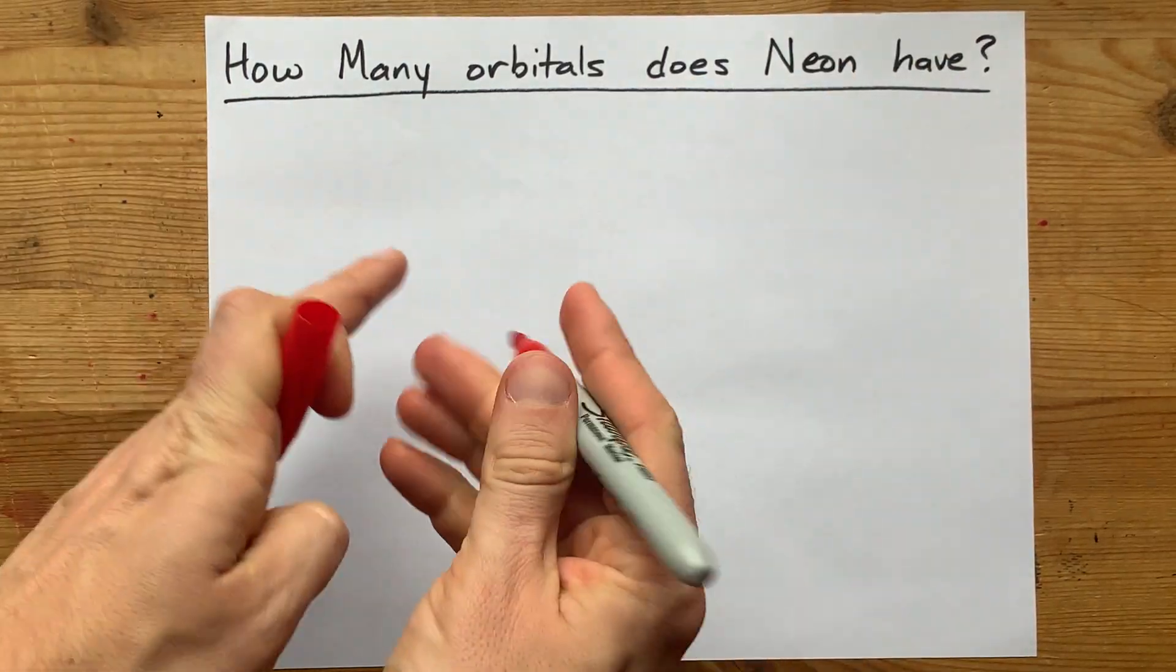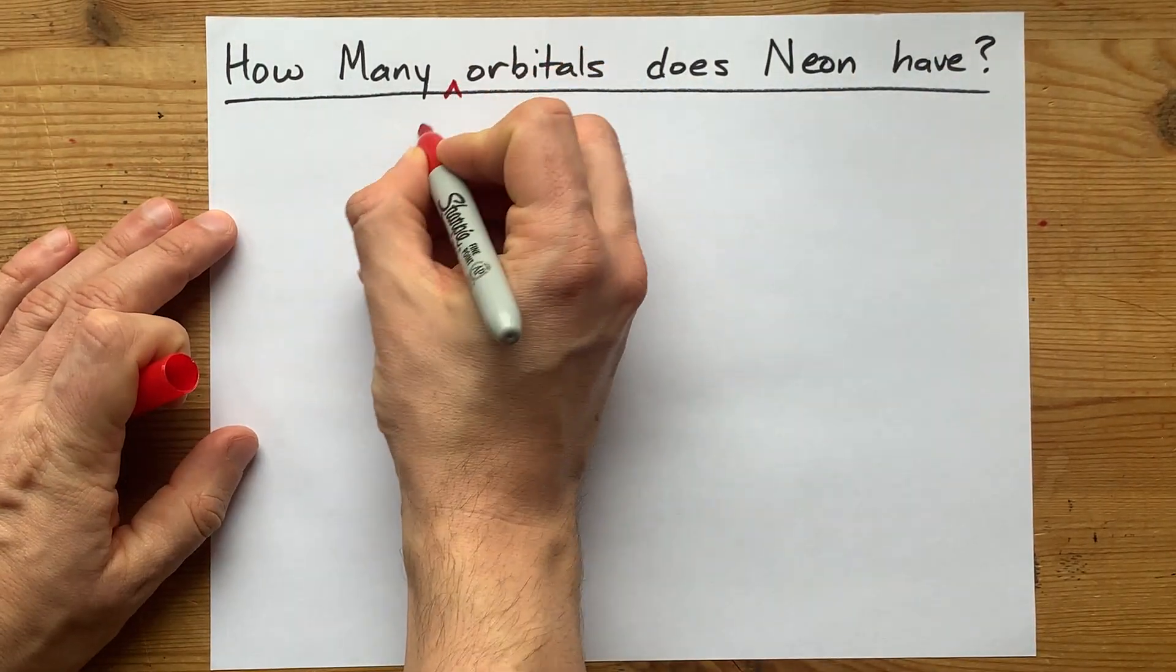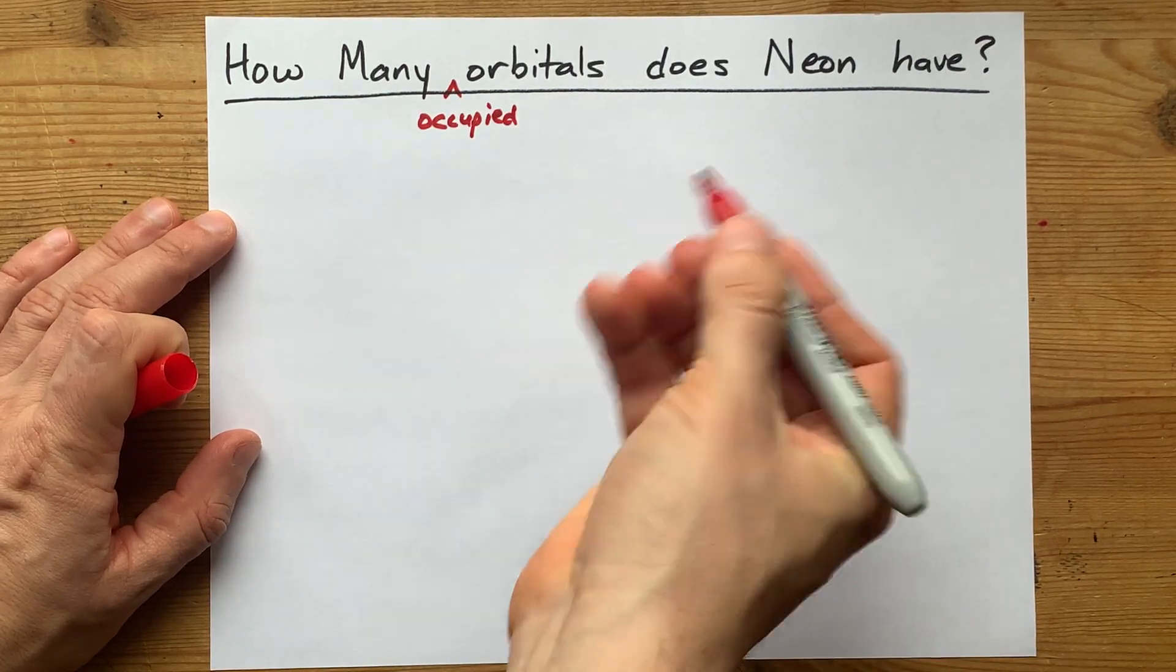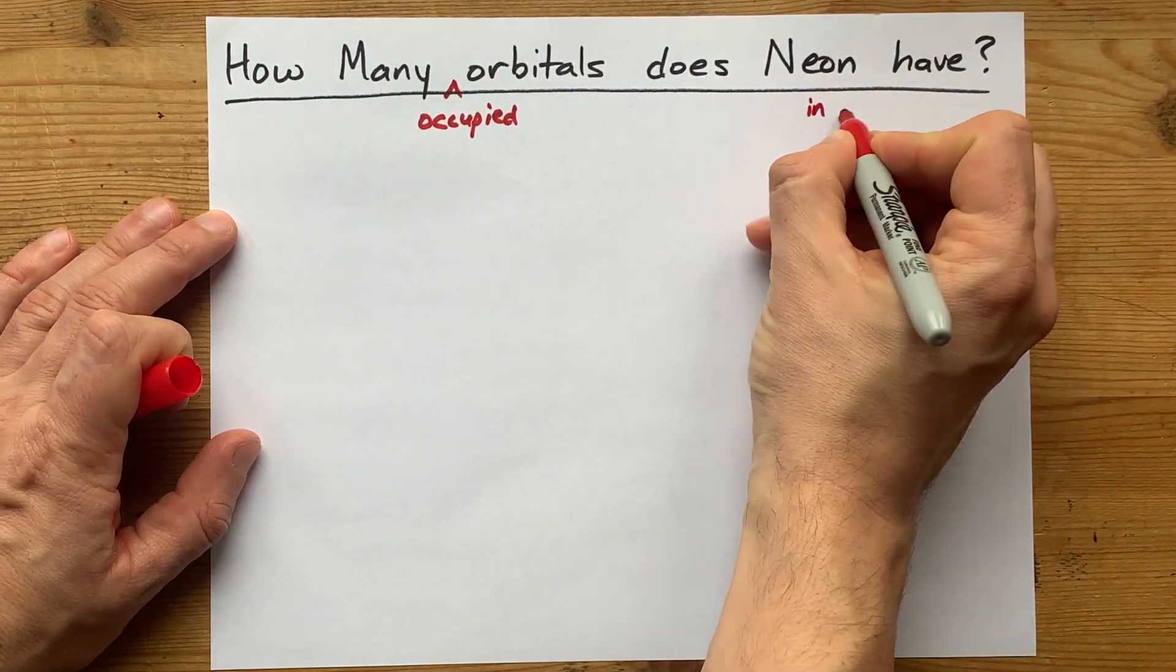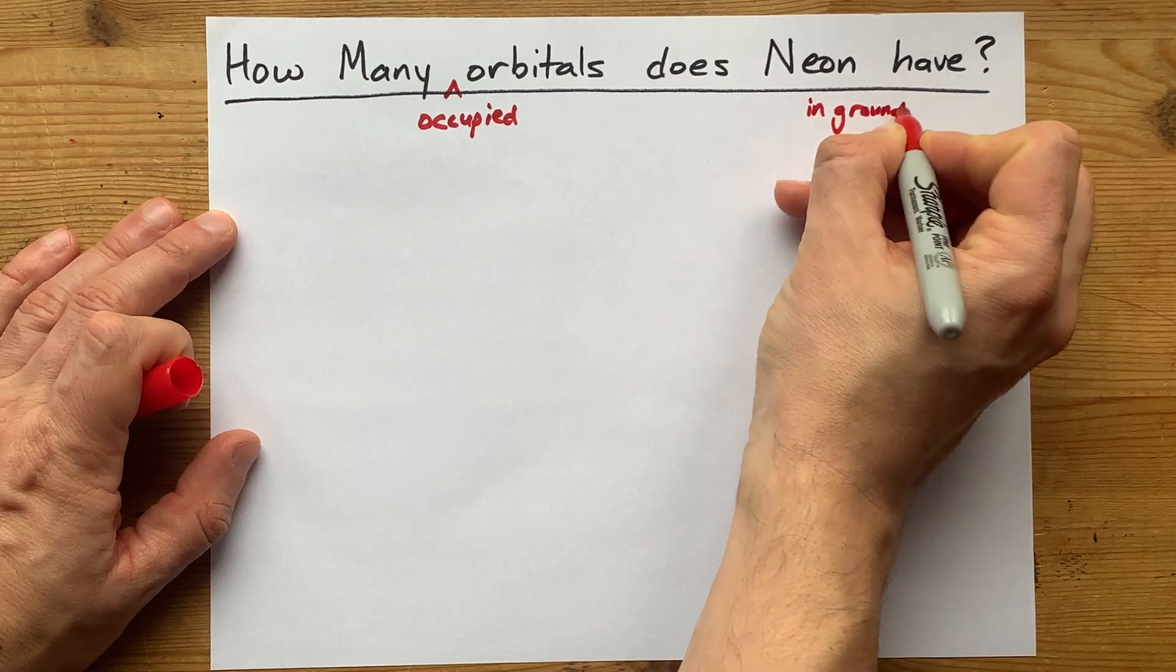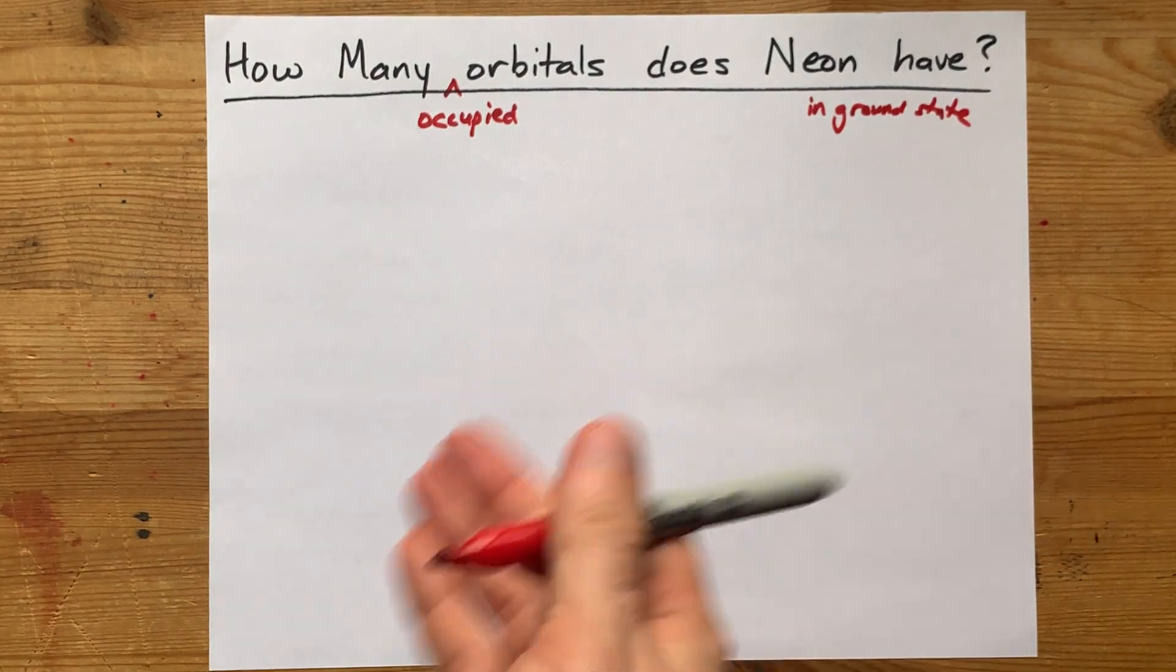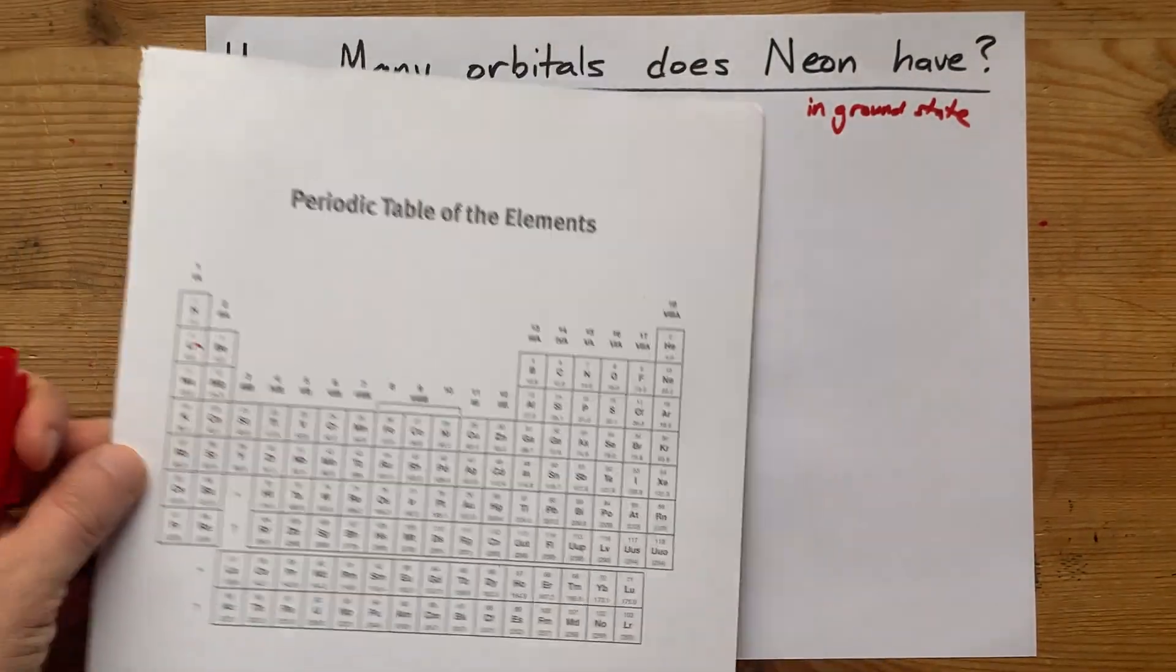Technically, all atoms have all orbitals. What your teacher's probably asking is how many of the orbitals actually have electrons in them, and specifically in the ground state. Of course, you can always promote electrons to higher energy levels by exciting them, but that's not what we're here for.